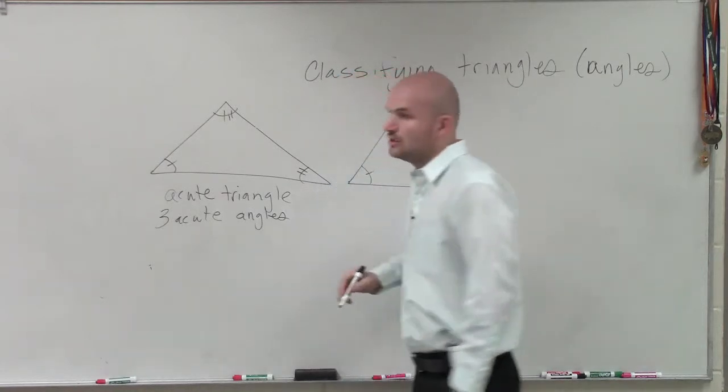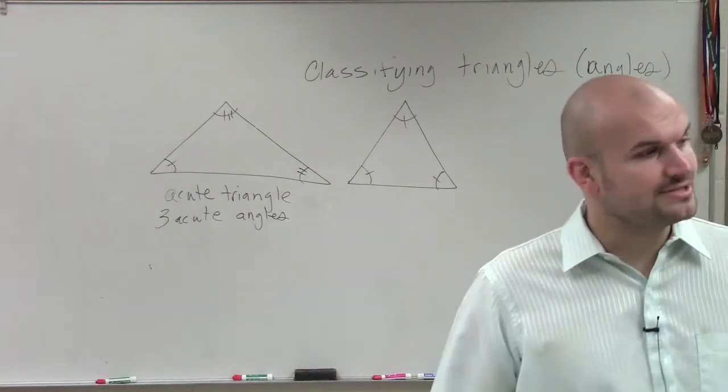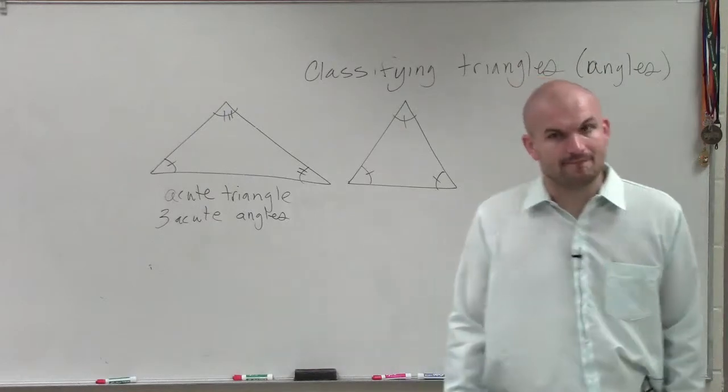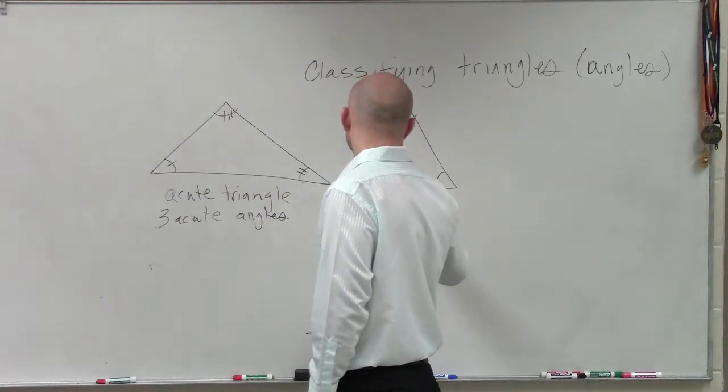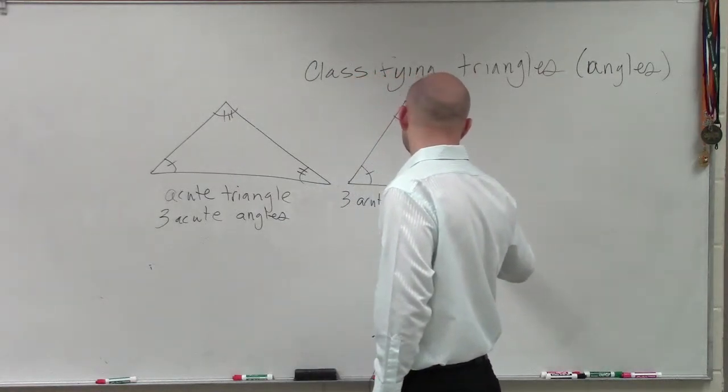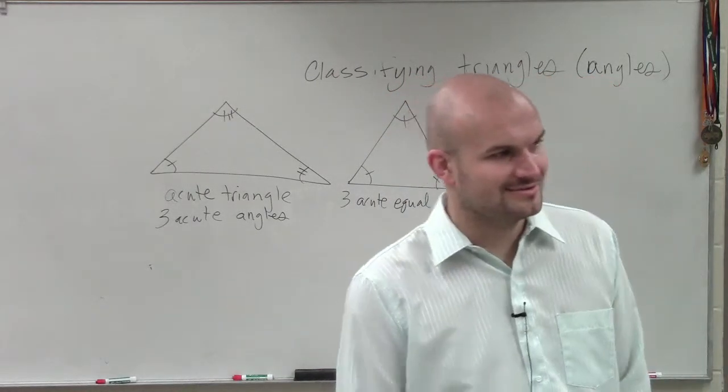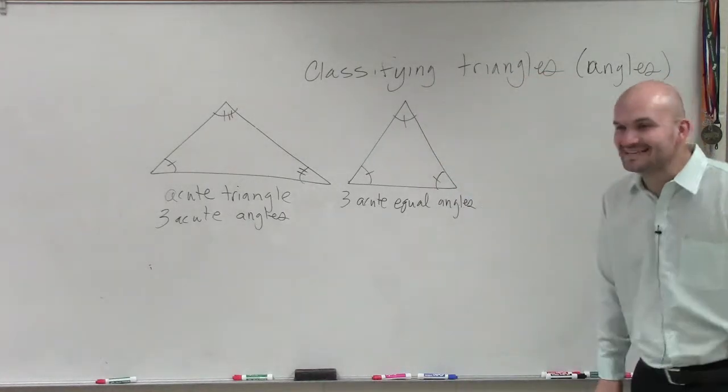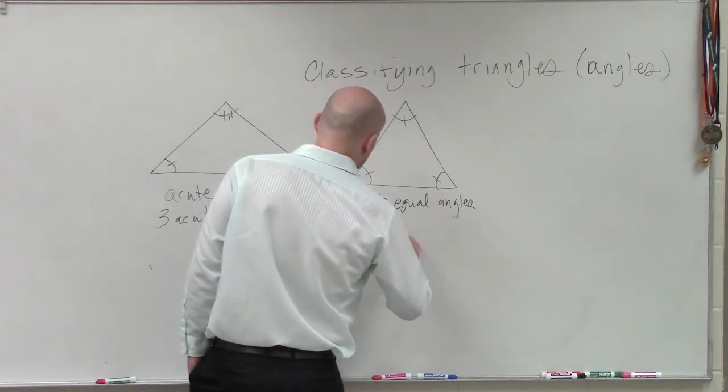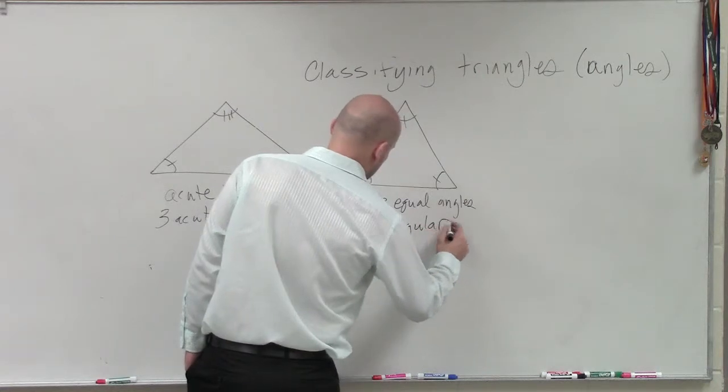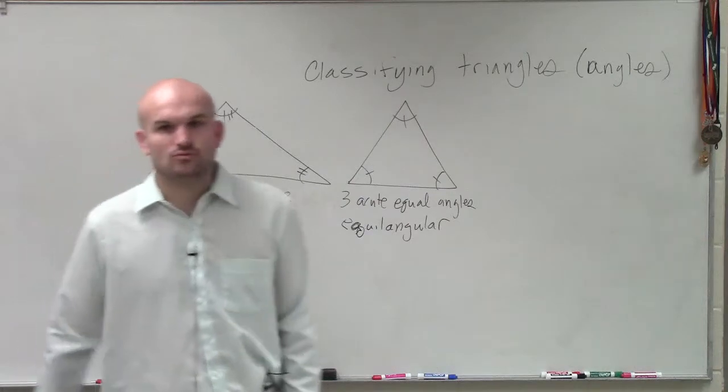Now, it's also possible for us to have three acute angles that are equal in measure. In this case, we could have one that's 60, 60, 60. So, therefore, if it has three acute equal angles, this is what we call equiangular.